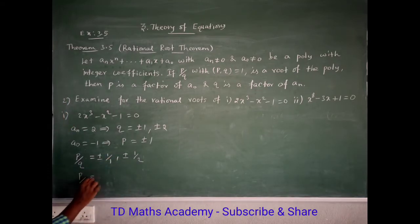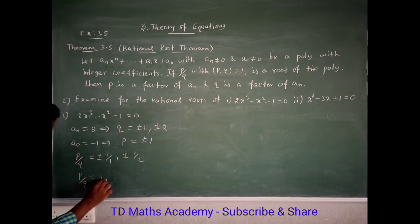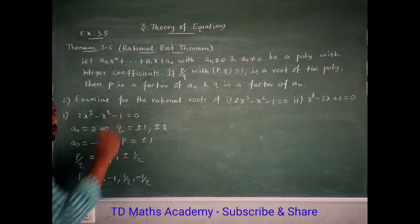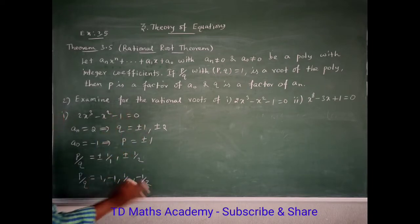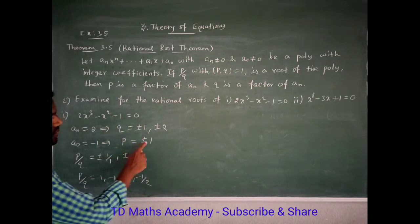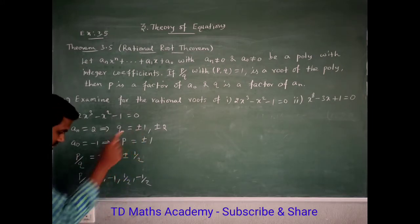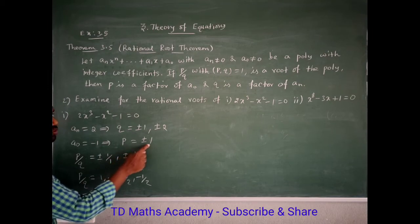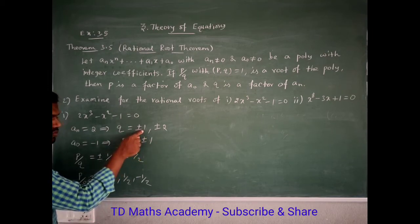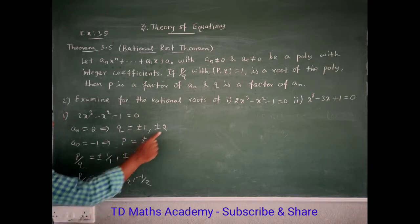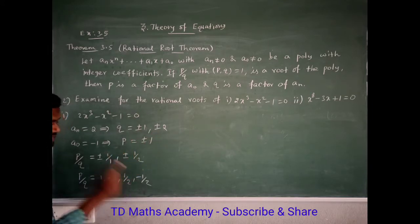So p/q equals plus 1 or minus 1, then plus 1/2 or minus 1/2. These are the possible rational roots — 4 pairs in total: plus 1 divided by plus 1, minus 1 divided by minus 1, plus 1 divided by minus 1, minus 1 divided by plus 1. Using these, you get 2 distinct answers: plus or minus 1 and plus or minus 1/2.